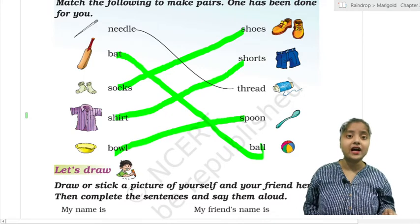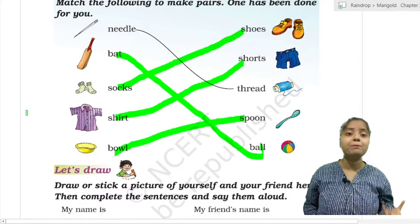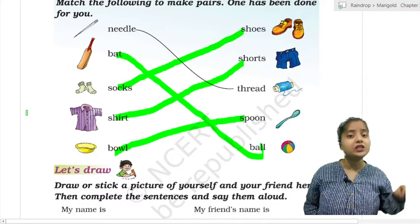Spoon? When we eat something like maggie, fruits, food, with a bowl. With a spoon, with a bowl, spoon with a bowl.